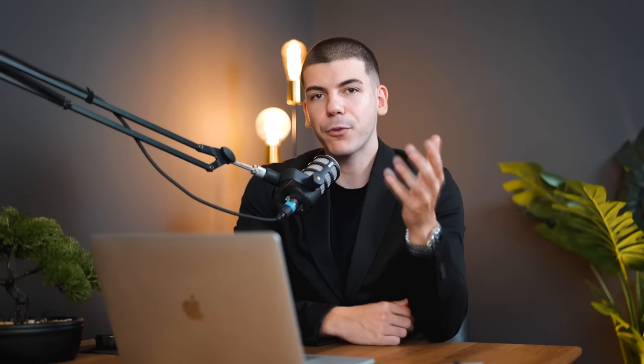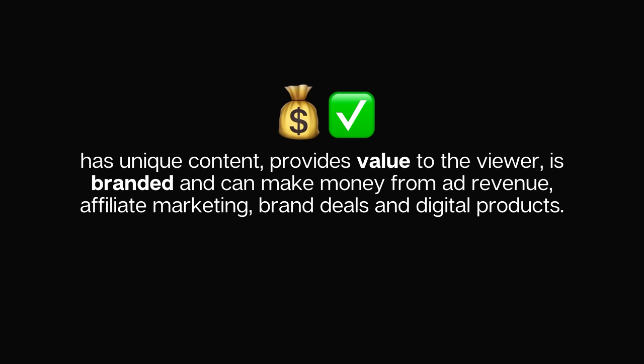Because there's so much misconception online around how YouTube automation works, let me share some of the most common bad and good YouTube automation channel examples. A good YouTube automation channel has unique content, provides value to the viewer, is branded, and can make money from ad revenue, affiliate marketing, brand deals, and digital products — not just one.